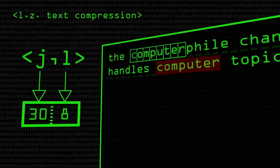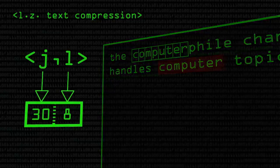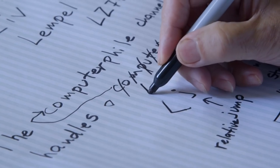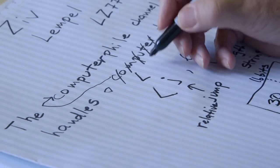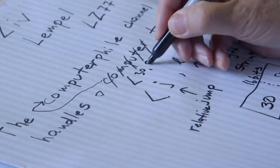Those numbers, those integers, are cheerfully representable within 8 bits each. So I could take out the computer here and replace it with, in my notation, 30, 8.